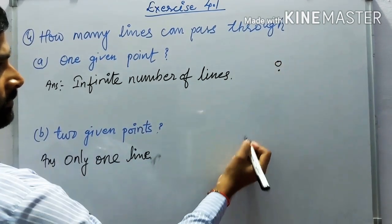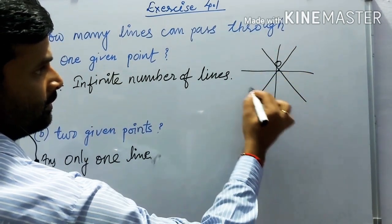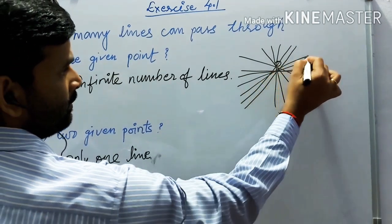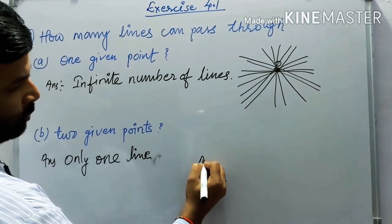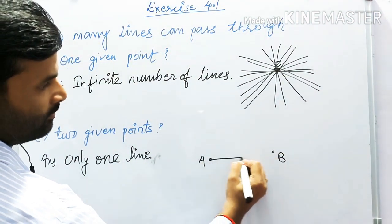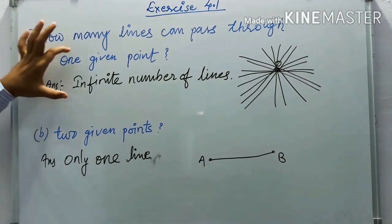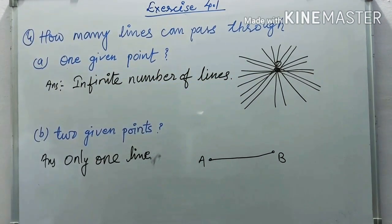To illustrate: if we take one point O, infinitely many lines can pass through it in all directions. But if we have two points A and B, then only one straight line can be drawn passing through both of them.